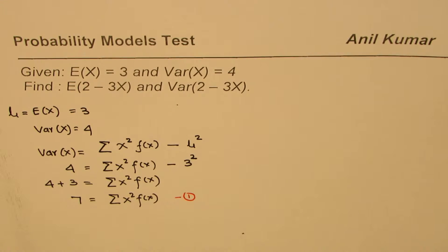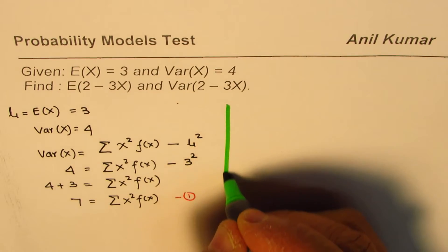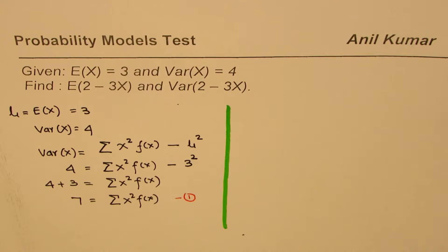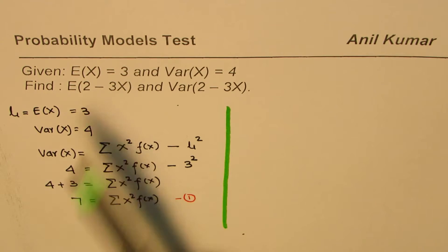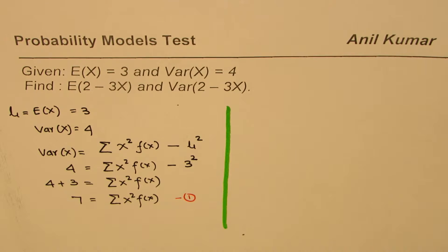Now let's look into the equation once again. We are given that the expected value for the random variable x is 3 and the variance is 4. Find the expected value for 2 minus 3x and variance for the same. So the function has been transformed. Now based on that, let's look into the transformation part first.